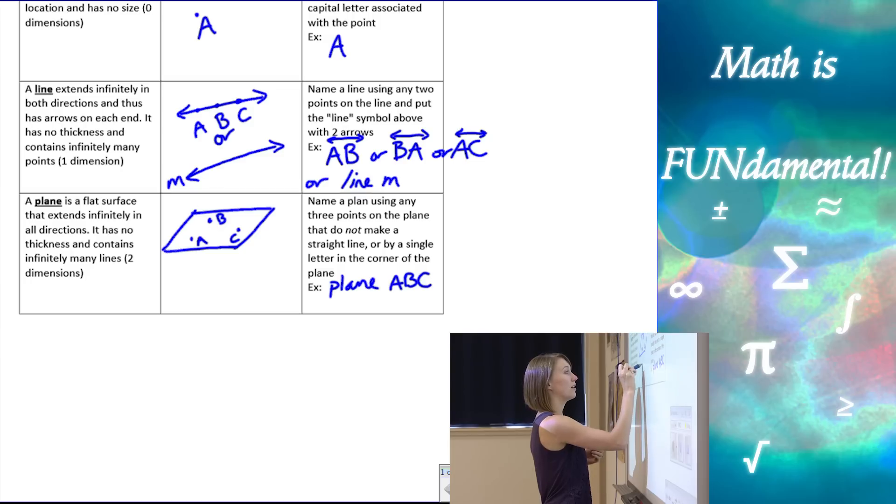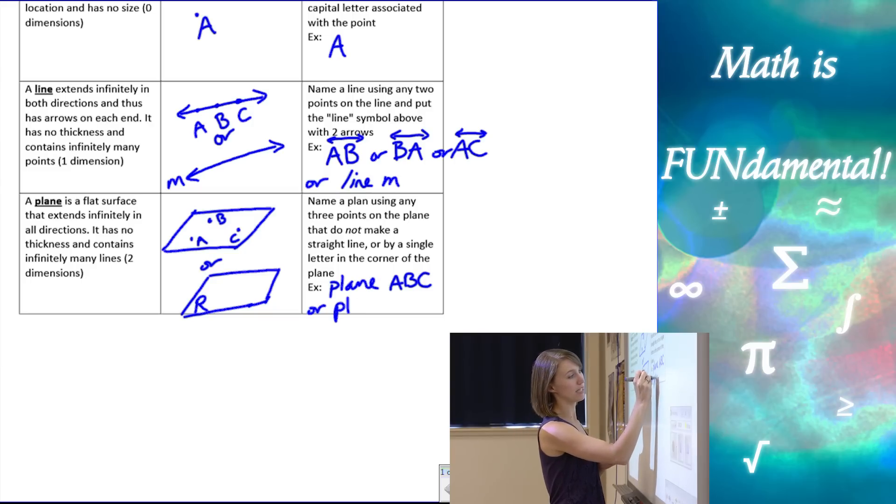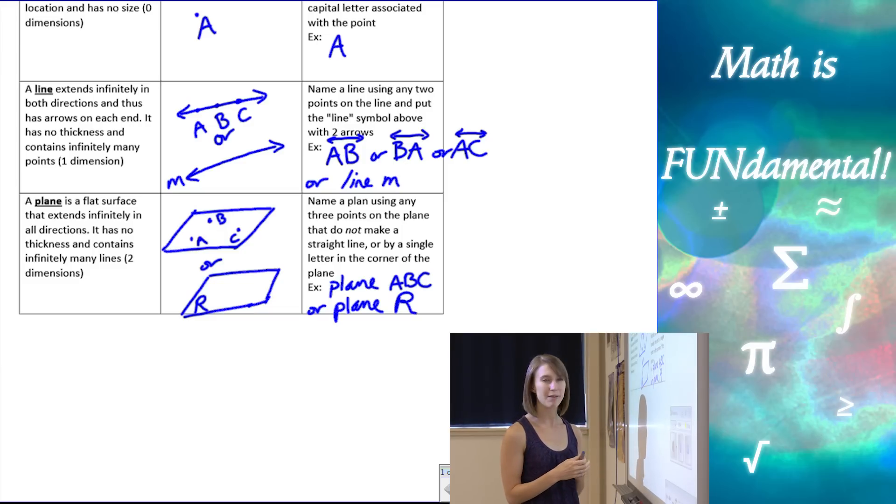Another way that you can name a plane is sometimes they will give you a little cursive letter in the corner of the plane itself. So for example, here I've used the letter R, so we can make this plane R, and it just depends on if they give you that information or not.